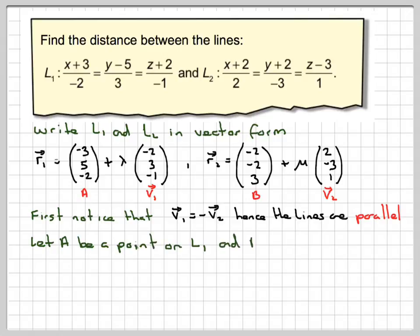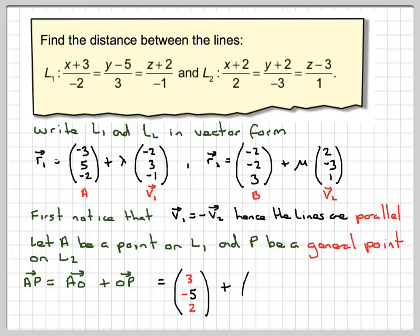Let A be a point on L1 and P be a general point on line 2. Then the vector AP is the same as going AO plus OP. The vector AO is minus 3, minus 5, 2, and the general point on this line is minus 2 plus 2mu, minus 2 minus 3mu, and 3 plus mu. Adding those together, we get 1 plus 2mu, minus 7 minus 3mu, 5 plus mu.